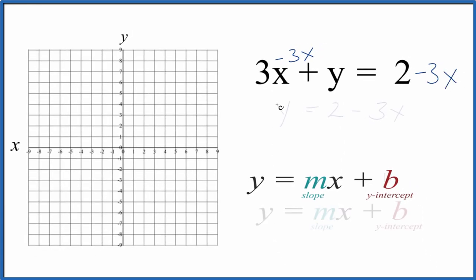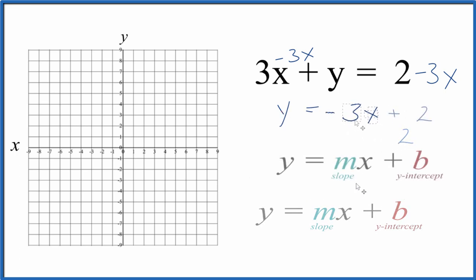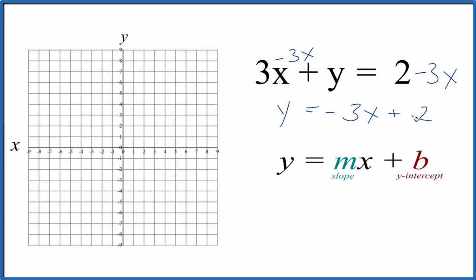So that gives us — let's move the 2 to the end and the negative 3x up front. In that way we have slope-intercept form. We have our x here. Negative 3 is our slope and we have our y-intercept as 2.